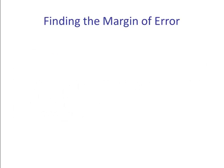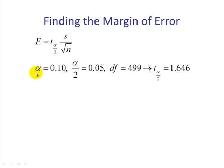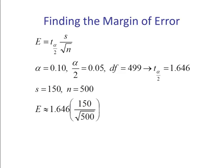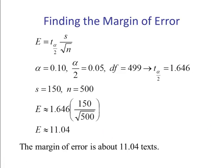Let's compute our margin of error. If we're doing 90%, that means α is 10%, 0.10. α/2 is 0.05, so this is going to be our column in table 6. This is going to be our row, n - 1. 500 - 1 is 499. This tells us what row, and this produces a t-value α/2 of 1.646. You can check this using table 6. S was given in the problem as 150, and n is 500. Substituting these values in the formula, we see that our margin of error is 11.04. The margin of error is about 11.04 texts.